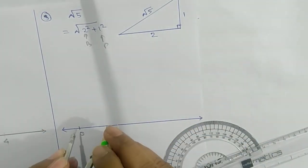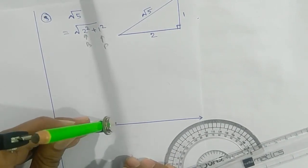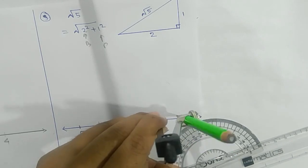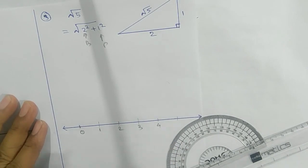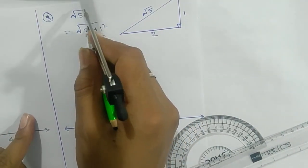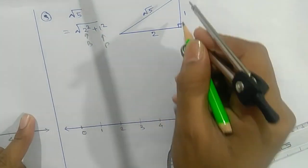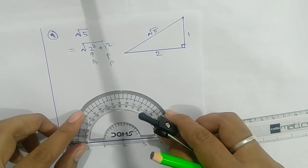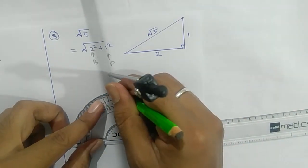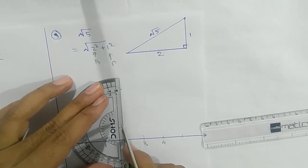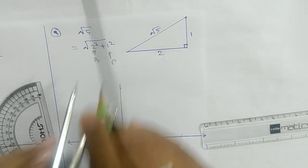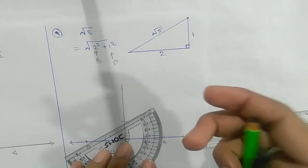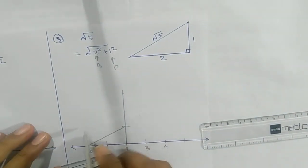Take your own arc length — we are marking: 1, 2, 3, 4, 5. For root 5, we need 2 units as base. So here: 1 unit, 2 units. After 2 units, we draw a perpendicular line of 1 unit. Use the compass or protractor to draw a perpendicular on the number line. Take 1 unit length and mark an arc.